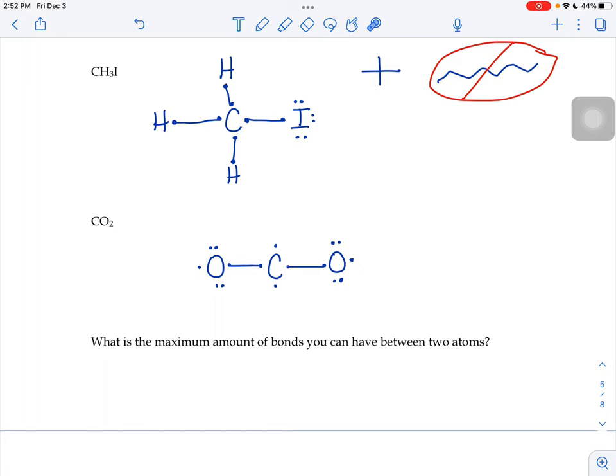So what ends up happening is the carbon and the oxygen say to each other, well, sharing helped, but I'm still not where I want to be. So I wonder if we could maybe share some more. Do you have any other electrons that we might be able to share with one another?